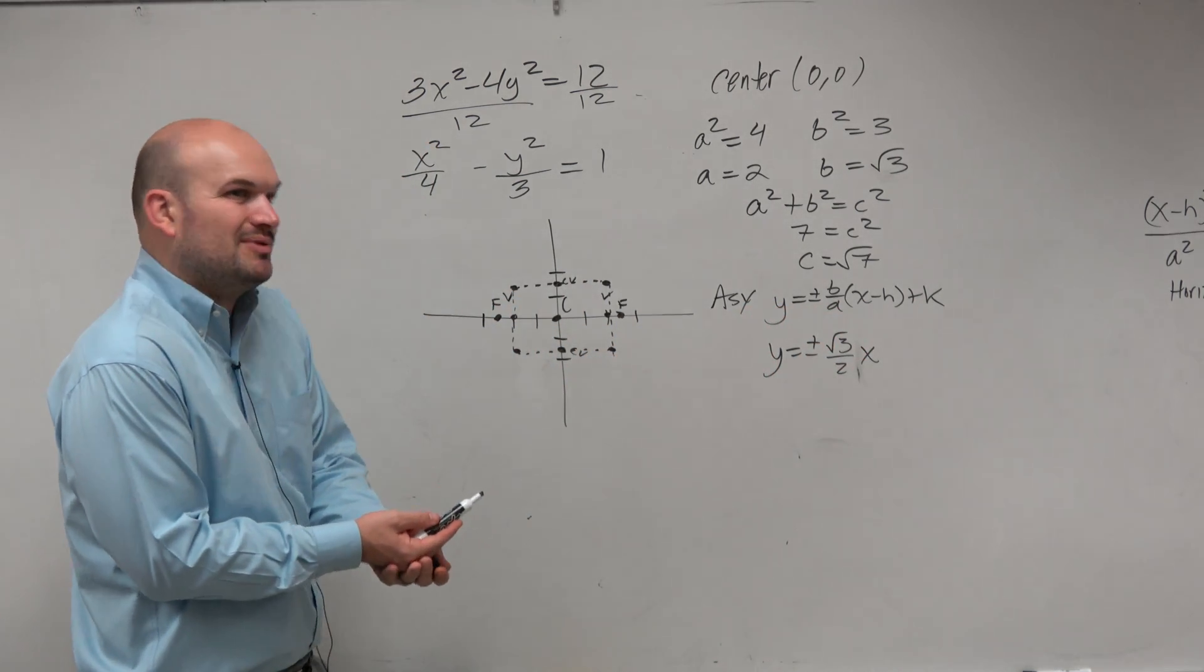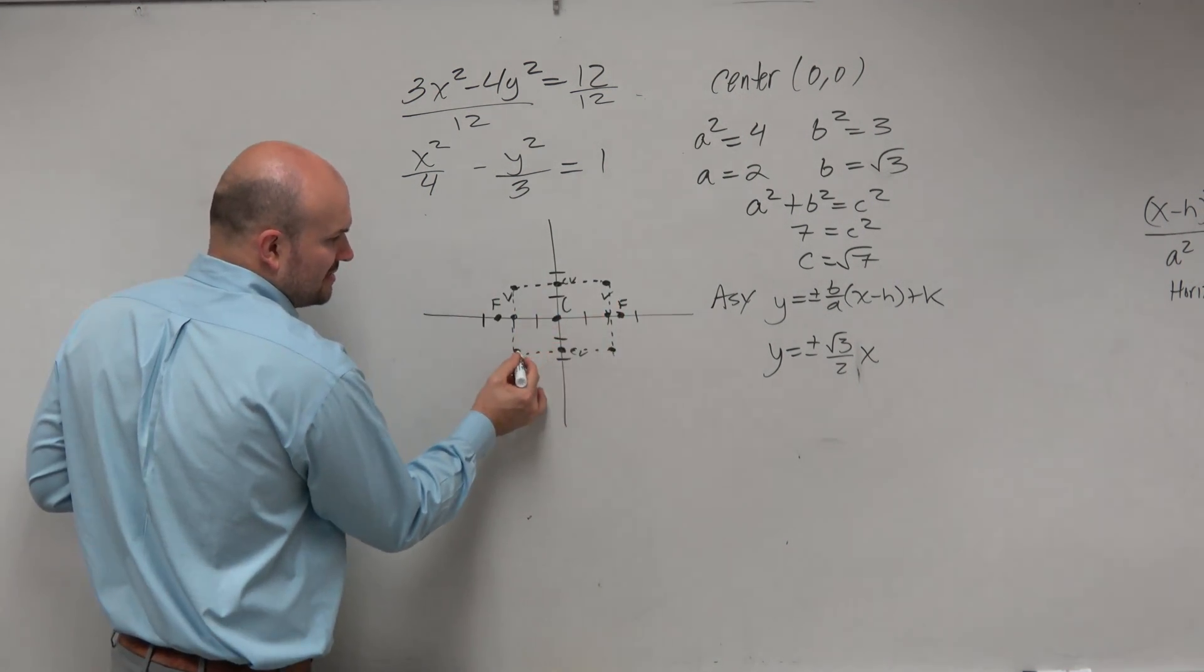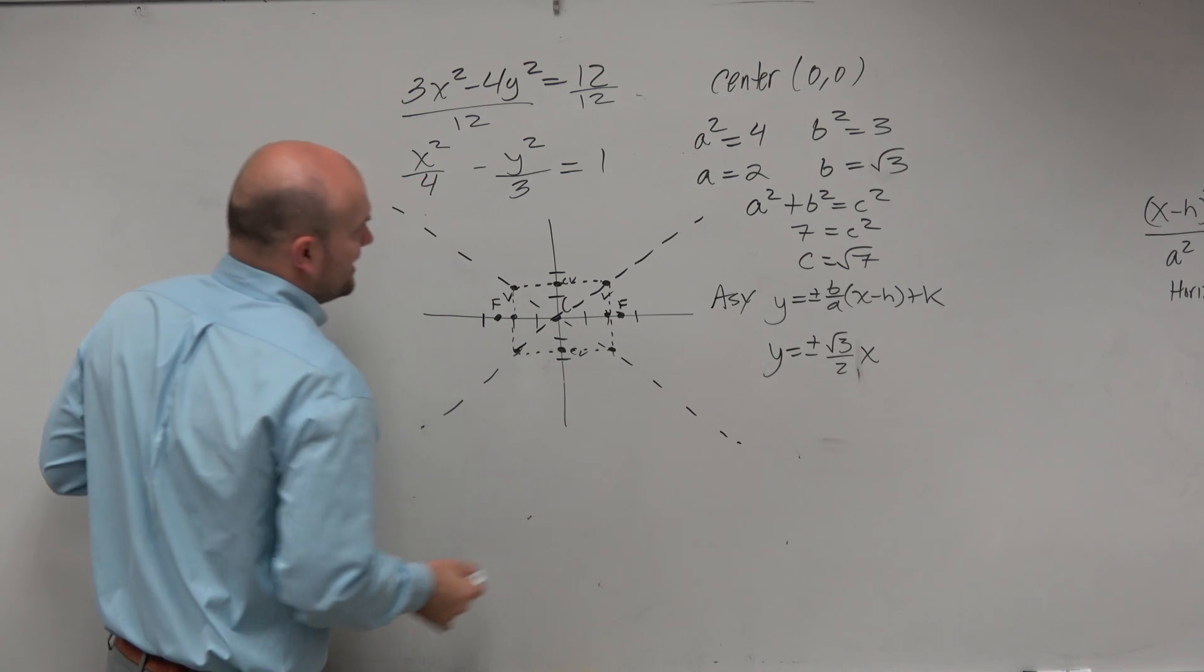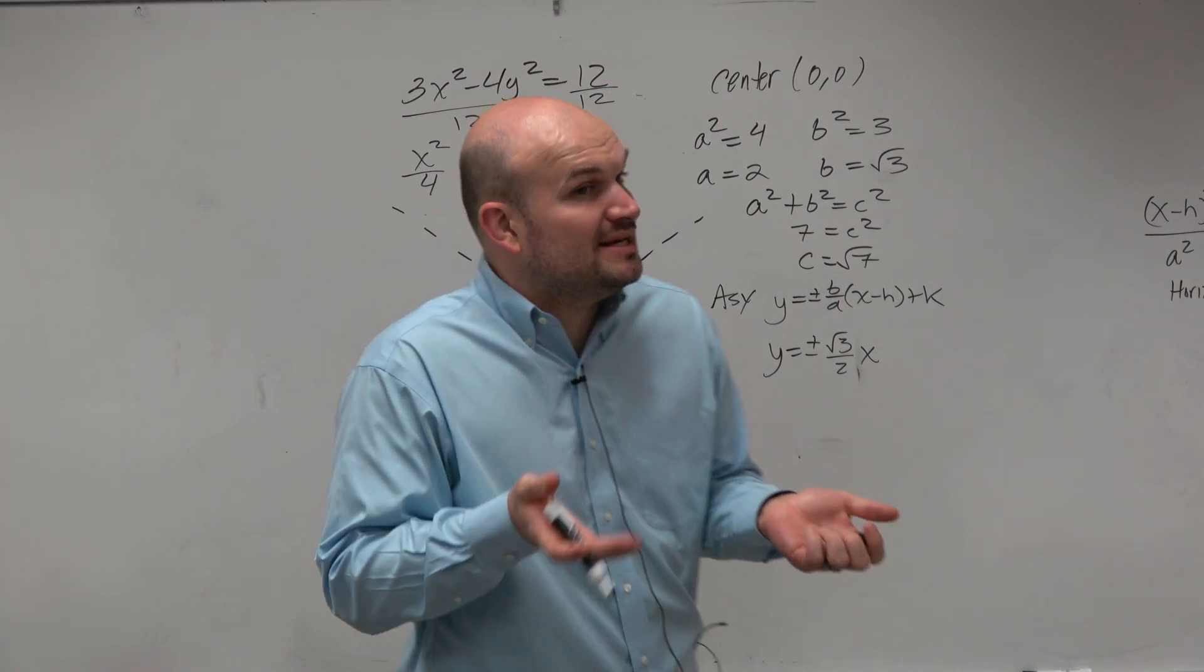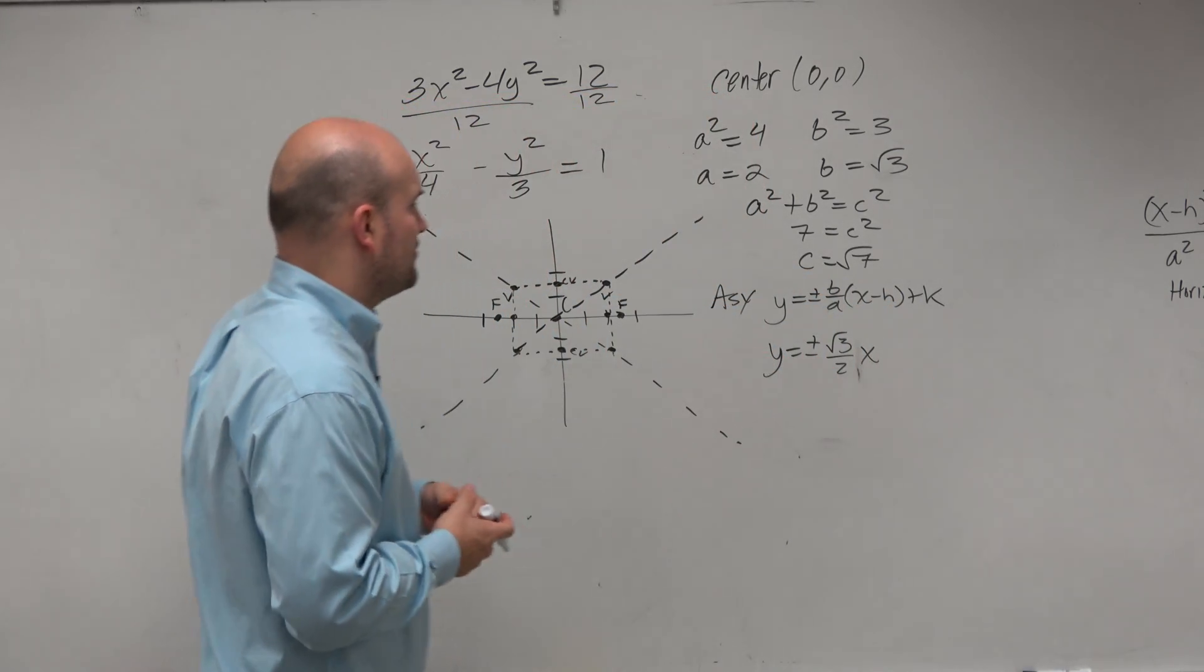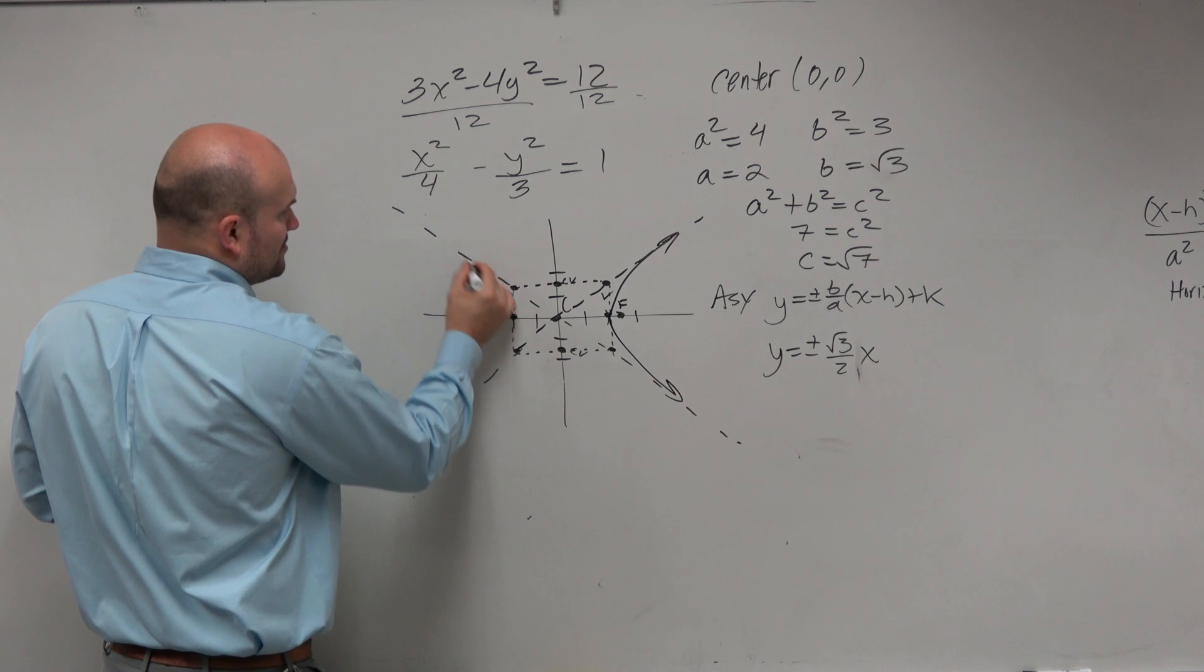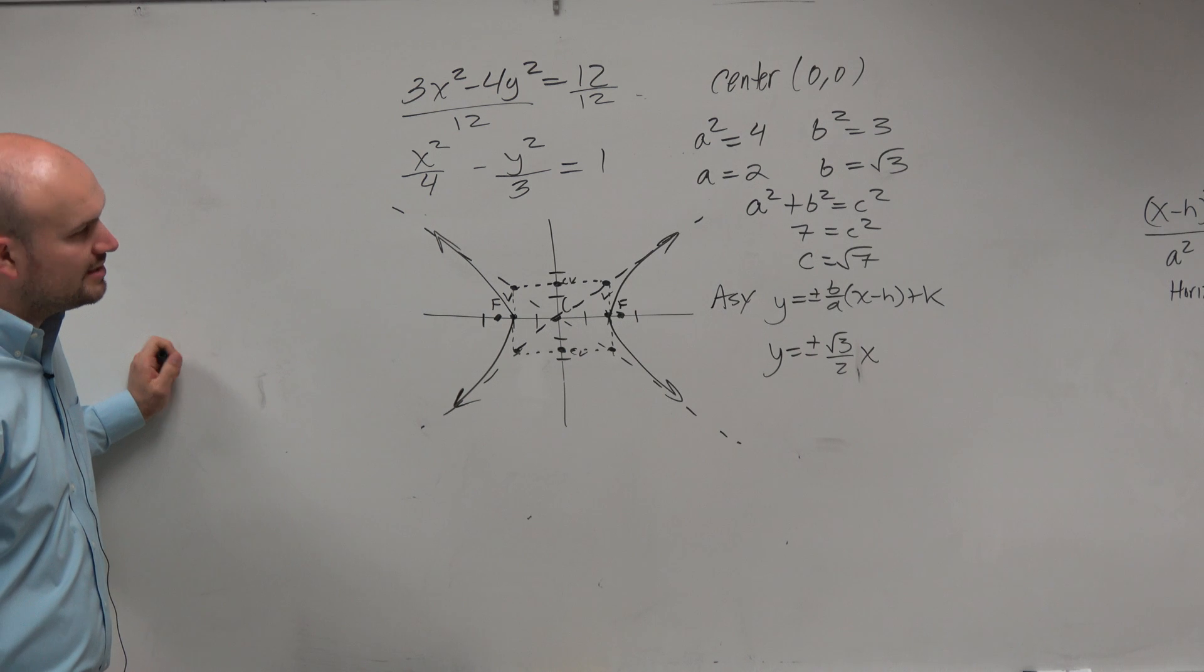But square root of 3 over 2 is probably not as simple. So what you can do is plot the co-vertices, make a nice little box, and then that's your equation of your asymptotes. Now, are you guys going to have to graph the asymptotes on a test? No. I mean, more likely than not. You might be asked to at least identify what the equation is. But I just wanted to kind of give you guys a way to graph them, just so you know.